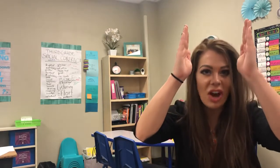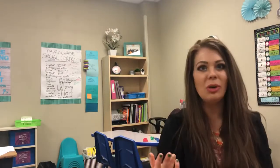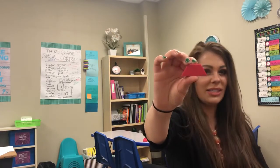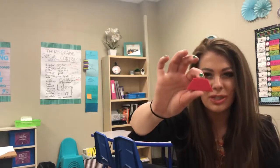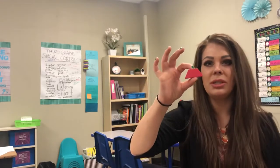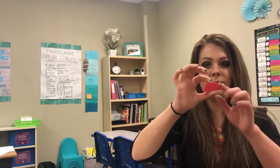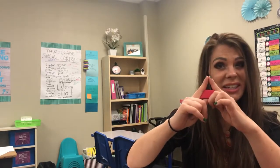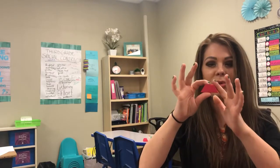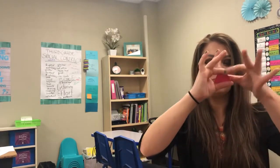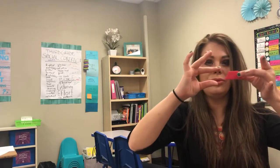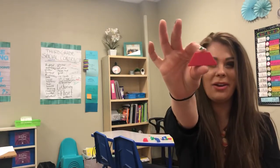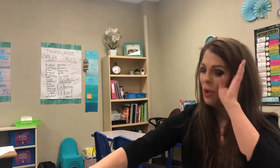Lines that go right next to each other and keep going forever and ever and never cross — those are parallel. So let's talk about shapes. This one is a trapezoid. It has exactly one pair of parallel sides. Can you see which ones are the parallel ones? Which ones are never ever gonna cross each other? That's our parallel pair — a trapezoid has one pair of parallel sides.